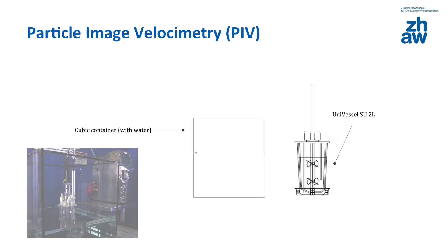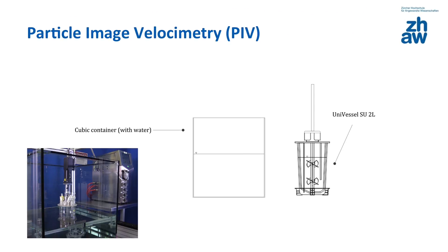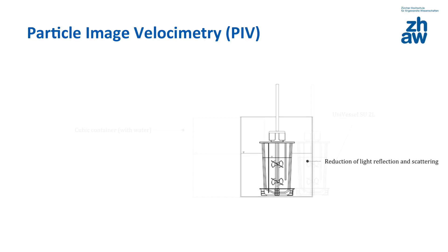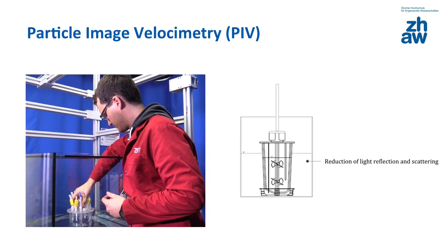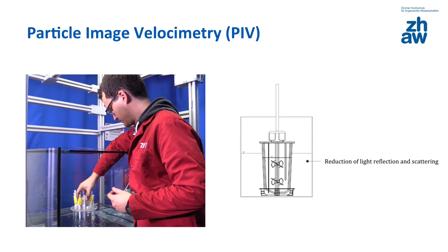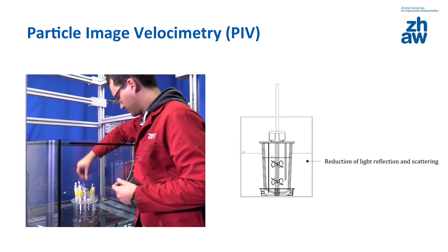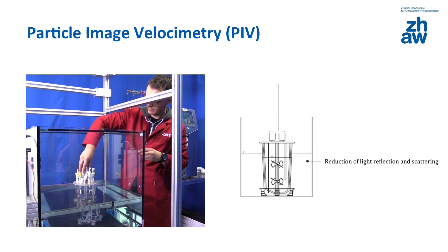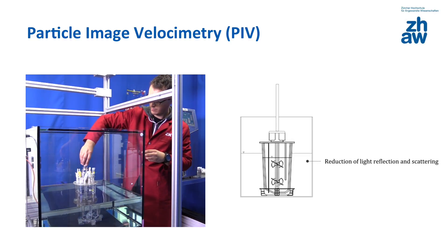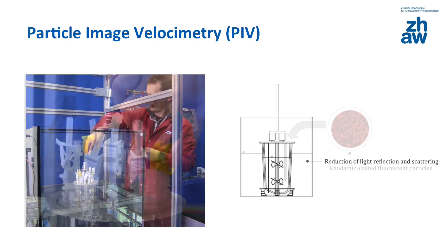It is essential that the bioreactor system is transparent and optically accessible. First of all, in order to reduce light scattering and light reflection, the Univessel SU2L system is placed in a cube-shaped vessel filled with water.